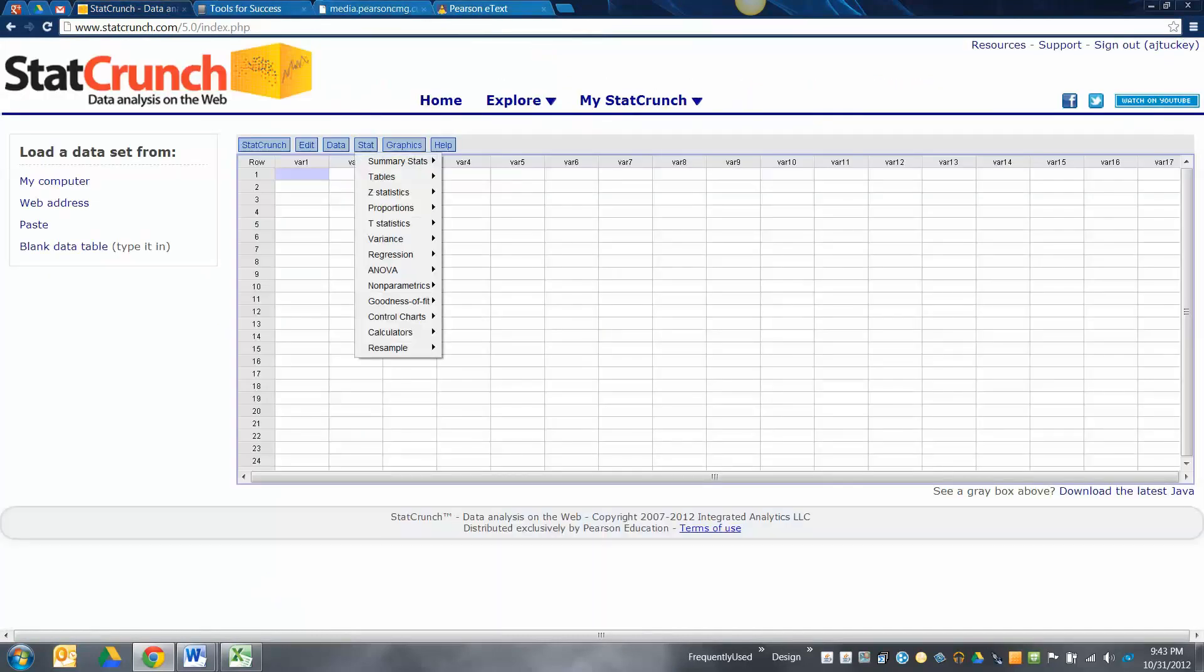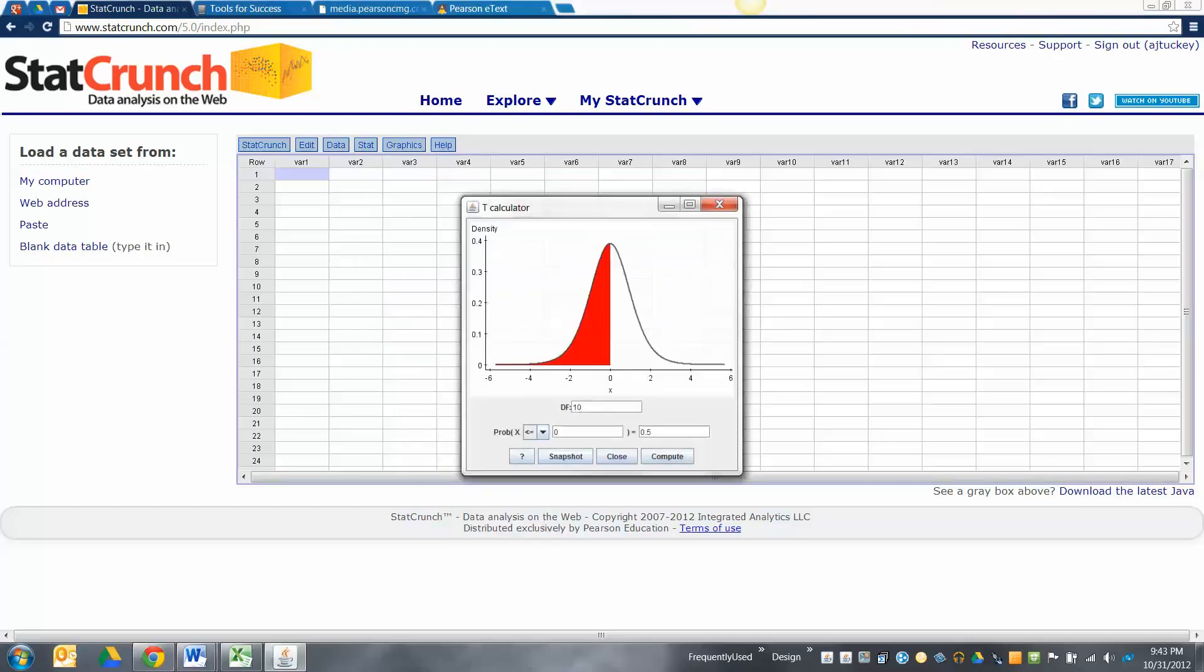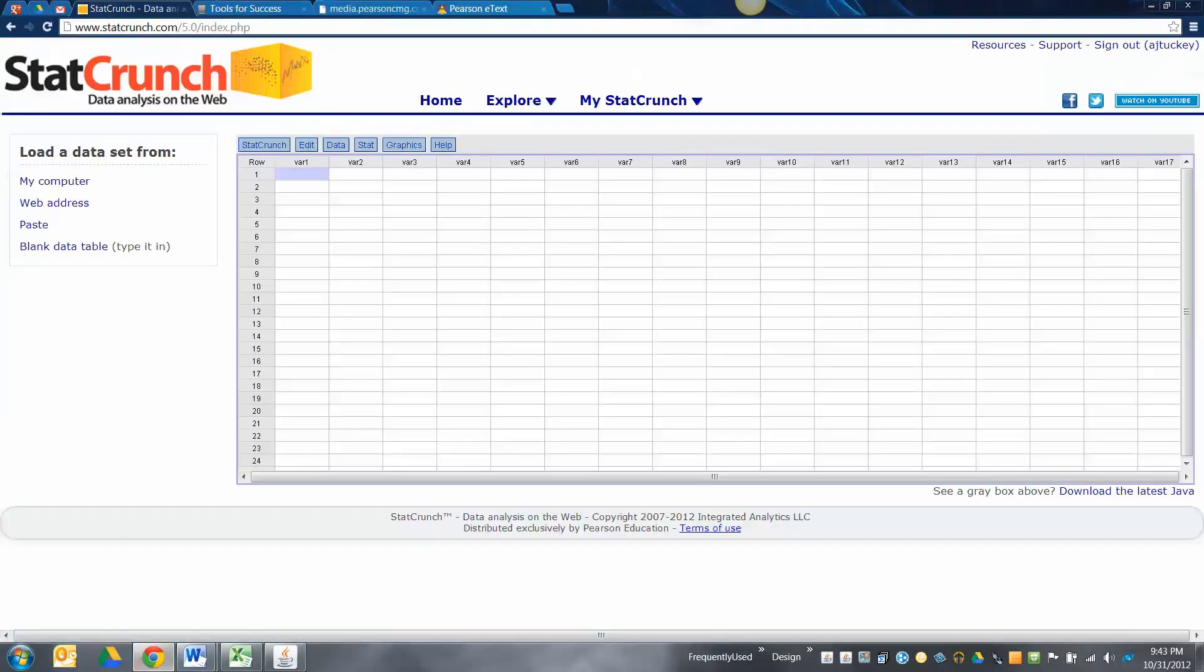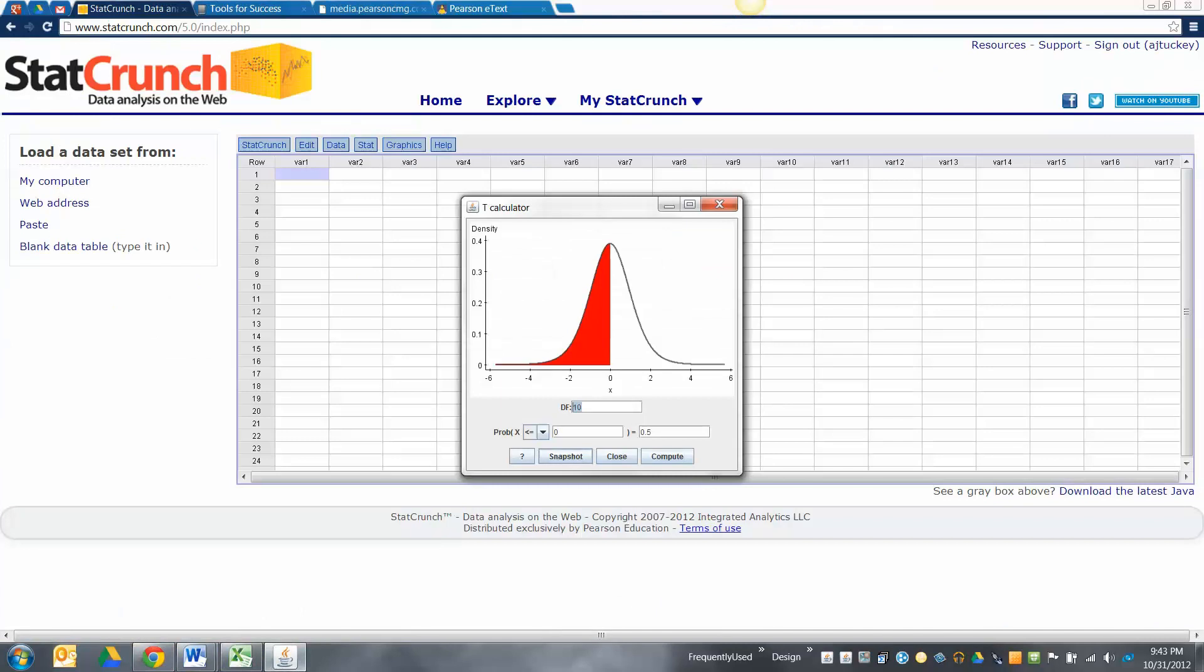What's my degrees of freedom on this? 20 degrees of freedom. I'm going to bring the Java up - 20 is my degrees of freedom. I want the probability that x is greater than or equal to t value.